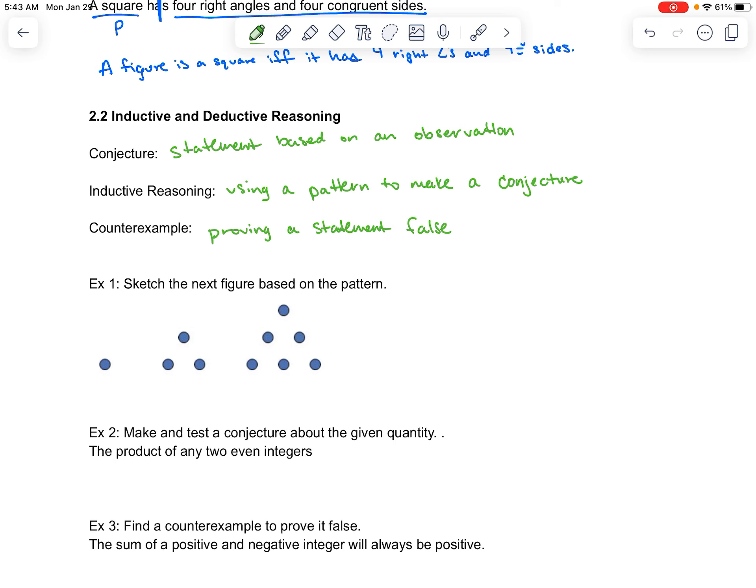In example one, sketch the next figure based on the pattern. It's a pattern, so it's inductive reasoning. We can see that this is going to be in a triangle, and we have one. This one has two sides as far as dots. This one has three, so the next one is obviously going to have four and fill within.